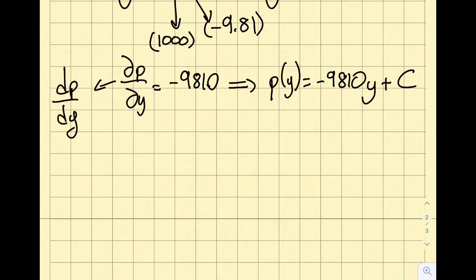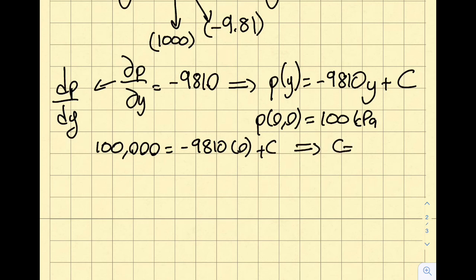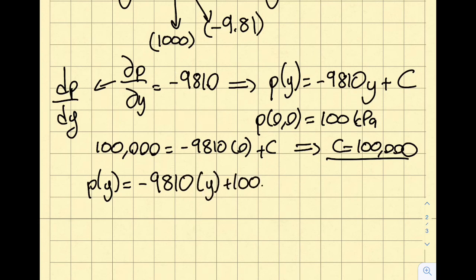So then how am I going to find it? I have a boundary condition. I'm given that at p at 0,0, this is 100 kPa. So then 100,000 is equal to minus 9810 times 0 plus c. So from here, you can see that the c is 100,000. Please do not forget to convert the kilopascal to pascals in these equations. I sometimes see these issues. So I get my constant.